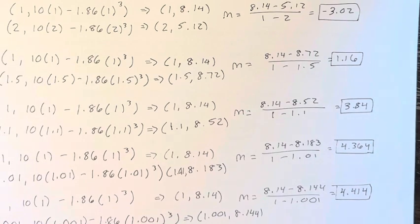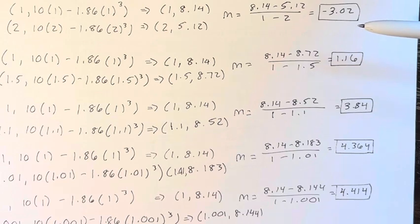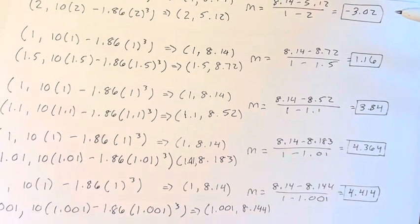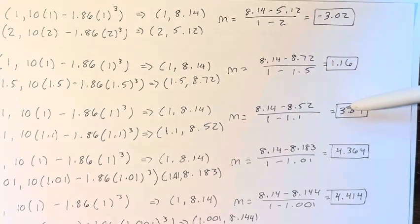These are helpful if you just want to pause here, you can look at the calculations. Our values are roughly negative 3, 1, 3.8, 4.3, and 4.4.